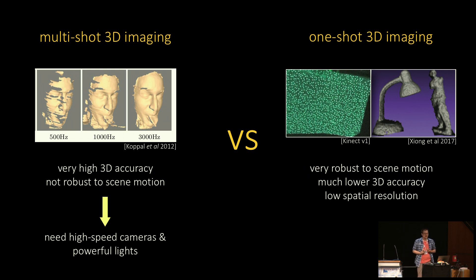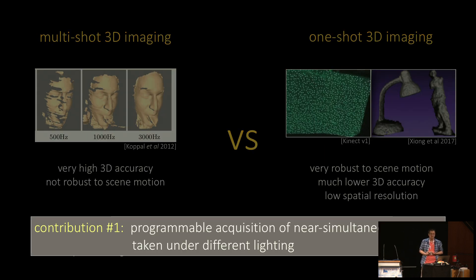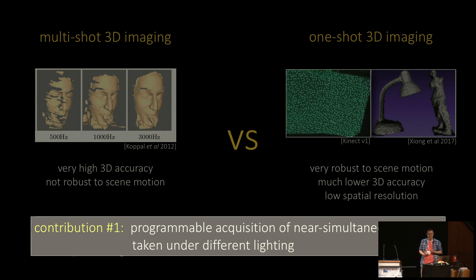On the other hand, we can capture dynamic scenes at low cost by either relying on sparse measurements from a single image or on a time-of-flight sensor. But in both cases, we end up with much less accurate models. Wouldn't it be great if we could program a video camera to output nearly simultaneous views of a scene for any number of illuminations we want, while still operating at standard video rates? That's exactly what our camera can do, and it's the main focus of my talk.